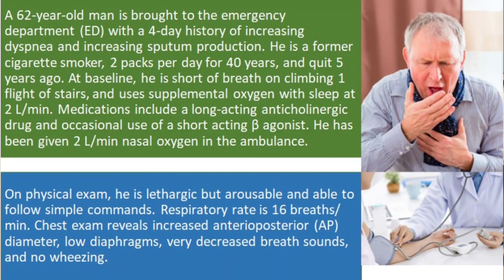Question number one: A 62-year-old man is brought to the emergency department with a four-day history of increasing dyspnea and increasing sputum production. He is a former cigarette smoker — two packs per day for 40 years — and quit five years ago. At baseline he is short of breath on climbing one flight of stairs and uses supplemental oxygen with sleep at two liters per minute. Medications include long-acting anticholinergic drugs and occasional use of a short-acting beta agonist.